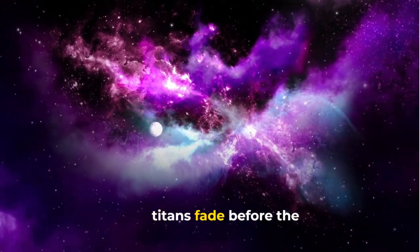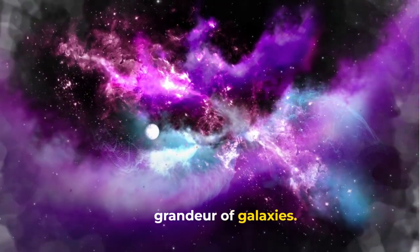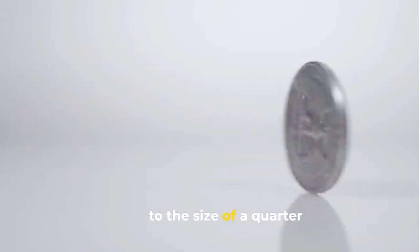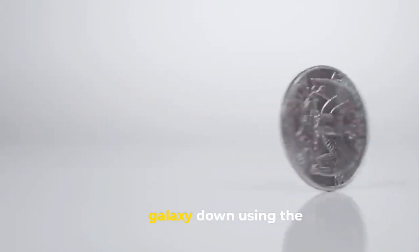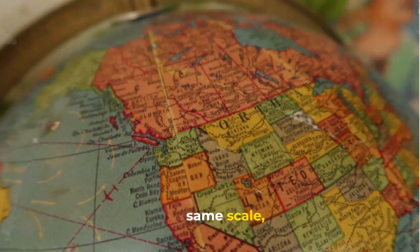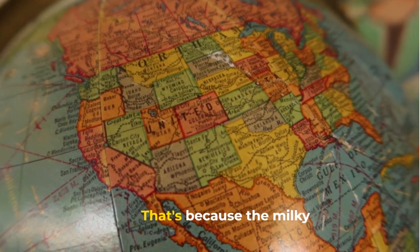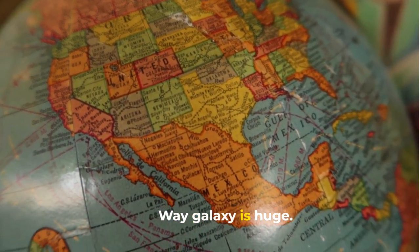Yet even these celestial titans fade before the grandeur of galaxies. In fact, if you shrink the size of our solar system down to the size of a quarter, and shrink the Milky Way galaxy down using the same scale, the diameter of the Milky Way would be roughly the size of the United States.